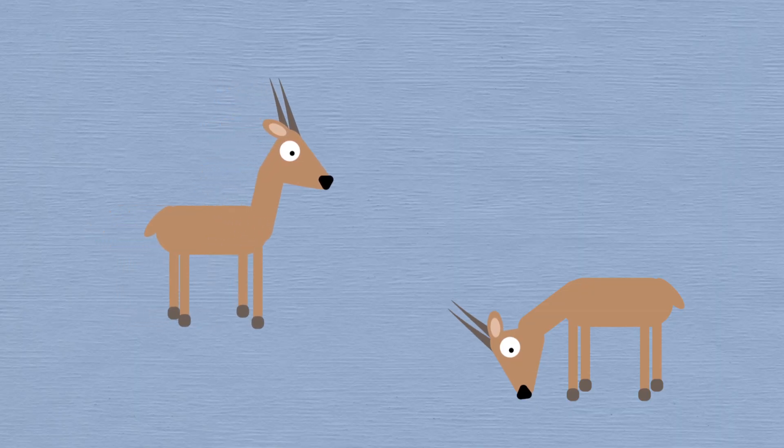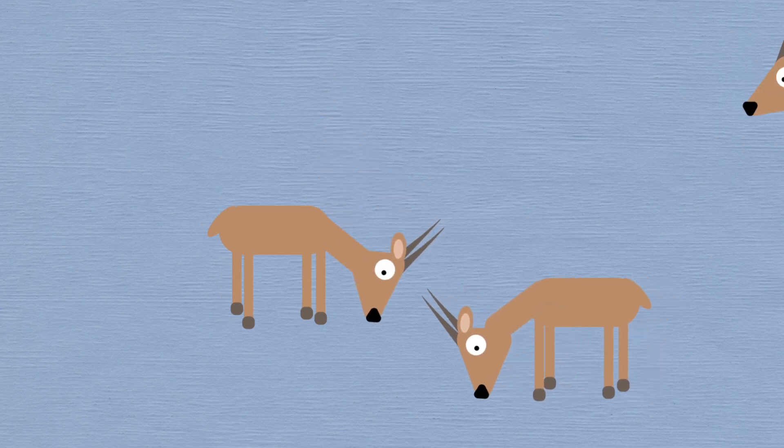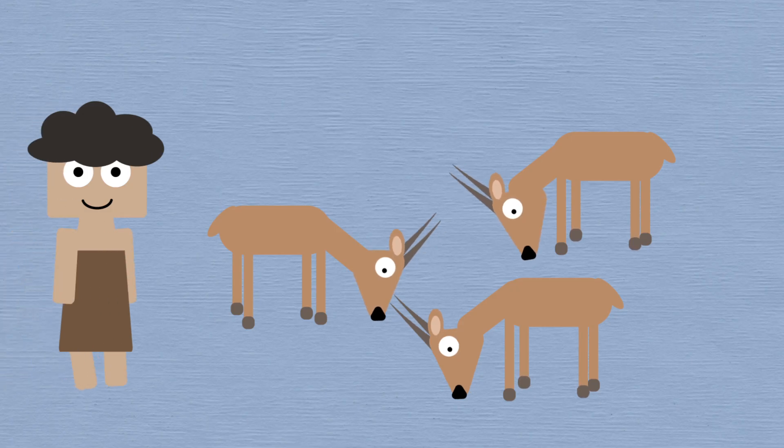Animals react differently to danger. Those which are nervous, fast and programmed for instant flight in the face of a threat are unsurprisingly difficult to keep in captivity. Gazelles are a good example of this, as they will run off at the first sign of danger, making them impossible to herd.